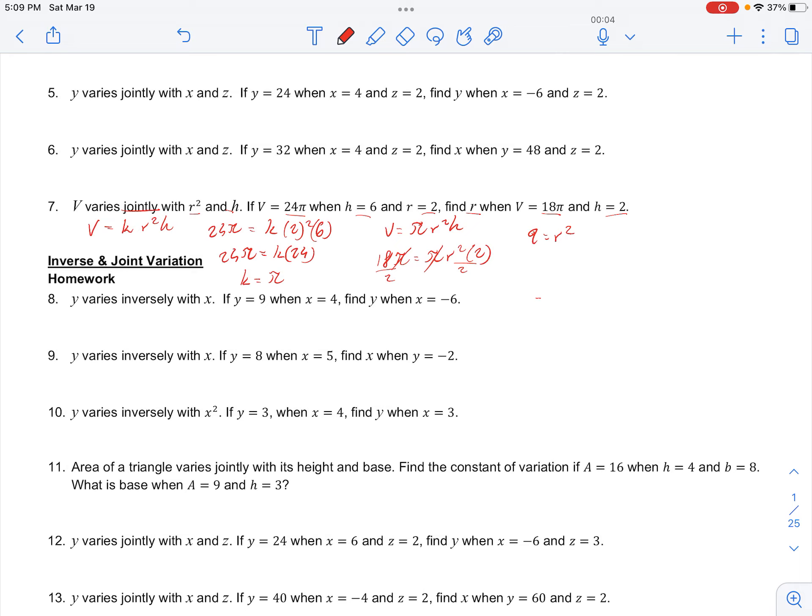And since we're working with distance and length, when we take the square root on both sides, we're going to keep the positive value because we can't have a negative radius. So our radius is going to be equal to positive 3.